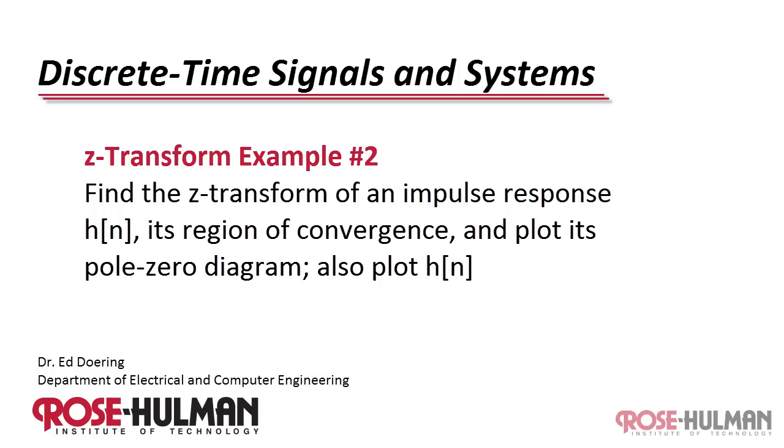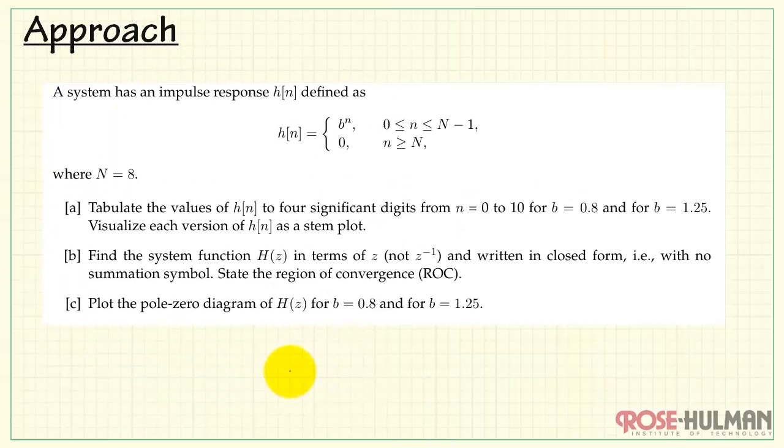This is Z-transform example number two. Find the Z-transform of an impulse response, its region of convergence, and pole zero diagram. Now in this problem we have a system with an impulse response H of n that's defined like this. We see that it is a non-zero value for a finite number of samples and then it's zero after that. In this problem specifically n is equal to 8. The key point though is that we have a finite length sequence.